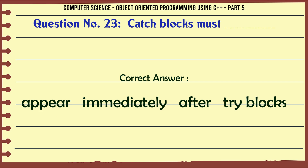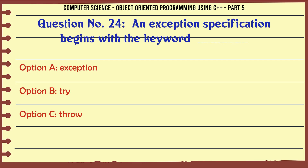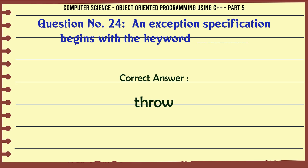An exception specification begins with the keyword. A. Exception. B. Try. C. Throw. D. Catch. The correct answer is: Throw.